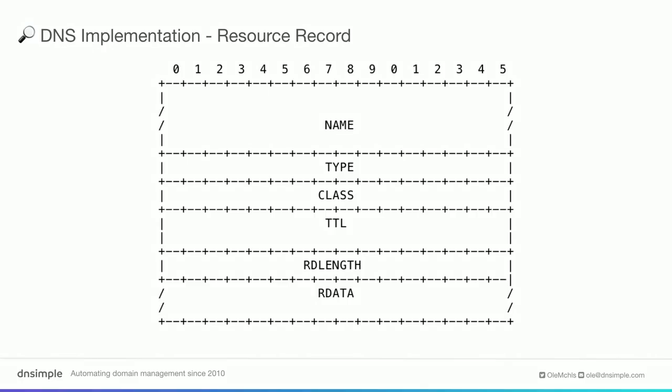A very important implementation detail is the so-called resource record — that's the A record, the MX record, CNAME, all of the different domain records you know. They're represented in this format. So they start with a name, then there's a type — the resource record type, which is A, AAAA (which is IPv6), CNAME, all of that.